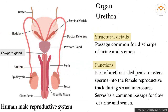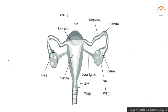Urethra serves as a passage common for discharge of urine and semen. The part of the urethra called the penis transfers sperms into the female reproductive tract during sexual intercourse, and serves as a common passage for flow of urine and semen.